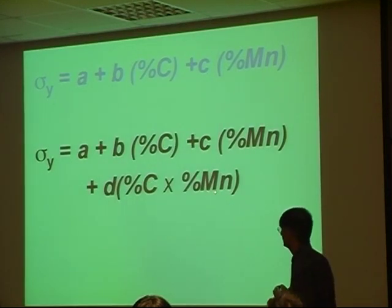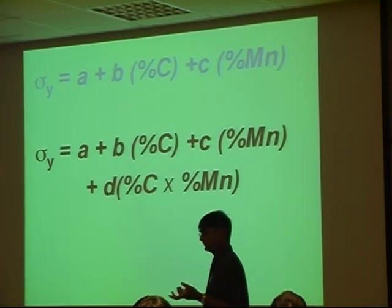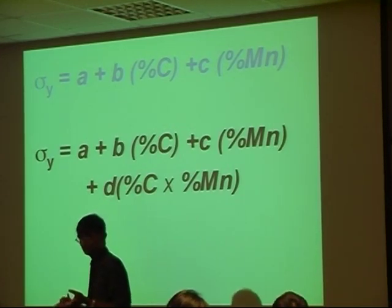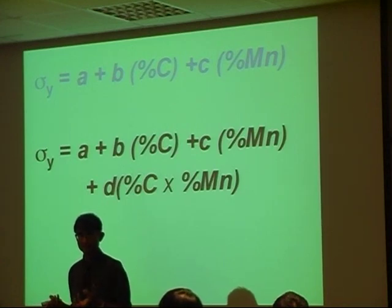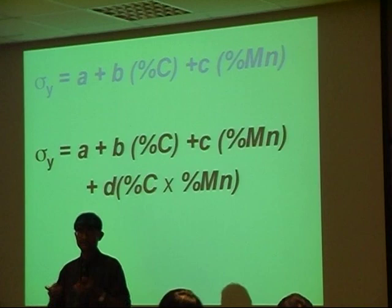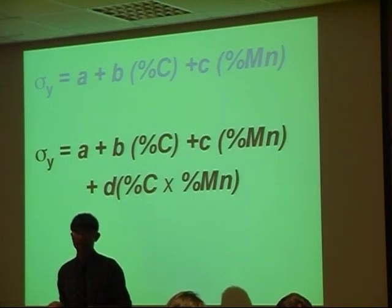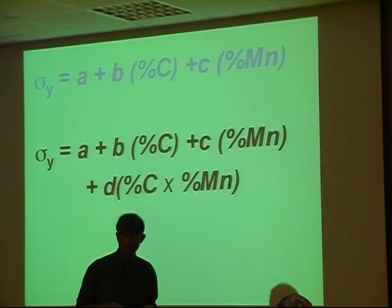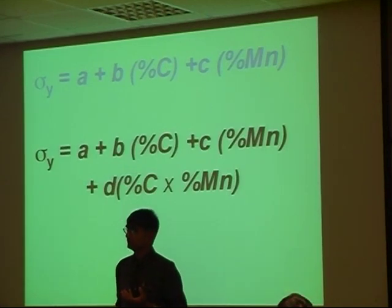So you go and derive another equation like this, and you have carbon multiplied by manganese. Now, I don't know whether I should multiply carbon and manganese, or should I divide? Should I take the square? I don't know. So it's still unsatisfactory. And if you have a bad boss, and they're behaving...